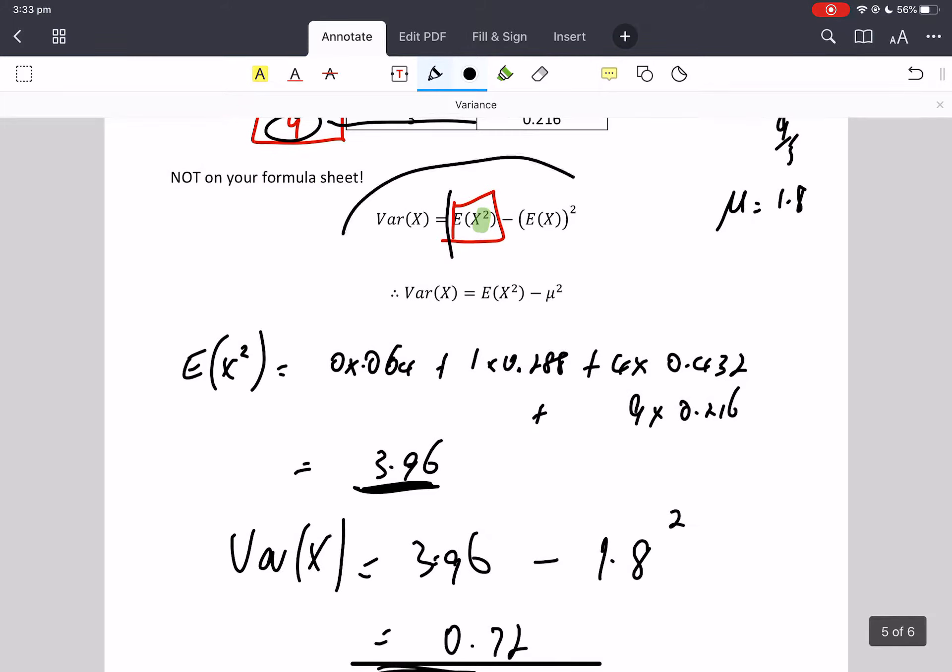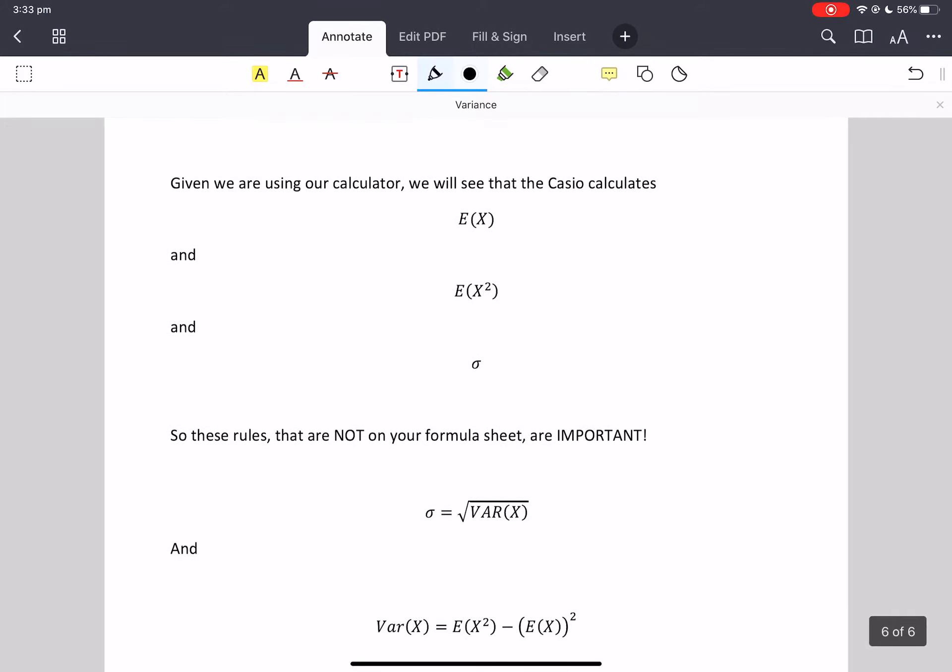I'm going to go, these formulas are probably pretty important. So when you're doing your Casio work, Casio will give you the expected value of x. It will also give you E of x, the expected value of x squared, and it will also give you sigma. And it's a tech active exam.